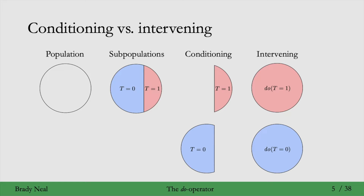So this is the visual picture to have in mind for the distinction between conditioning, which is just restricting to a subset, and intervening, which is still looking at the whole population but setting their value of treatment to the specific value that we're intervening on.